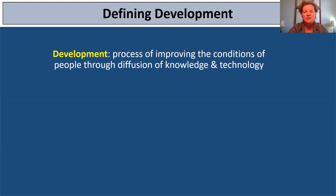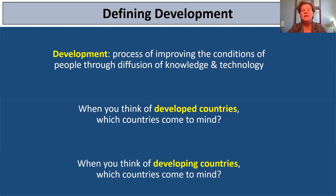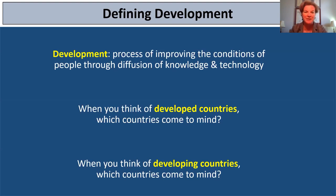People are generally familiar with the terms developed and developing. When you think about developed countries, which come to mind? Countries like the United States, Japan, the United Kingdom, France? Why do those specific countries come to mind? When you think of developing countries, which come to mind — countries like Haiti, Laos, Chad, Malawi? Is it what they have or don't have? Whether the people are rich or poor, more or less educated? Why do you think of those specific countries when you think of the words developing or developed?